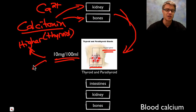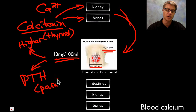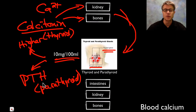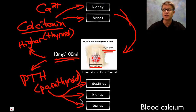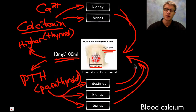If blood calcium goes too low, the parathyroid gland secretes a hormone called PTH — parathyroid hormone, easy to remember because it comes from the parathyroid. PTH affects multiple parts of the body: it signals the intestine to pull more calcium out of our food; it tells the kidney to hold on to calcium and not excrete it; and in the bones it releases calcium ions directly into the blood supply. All three of these things increase the blood calcium levels, completing that feedback loop.